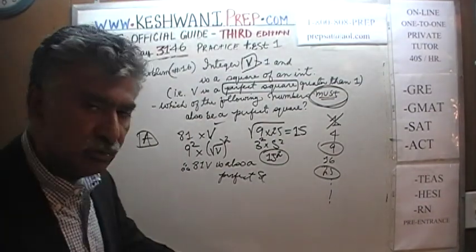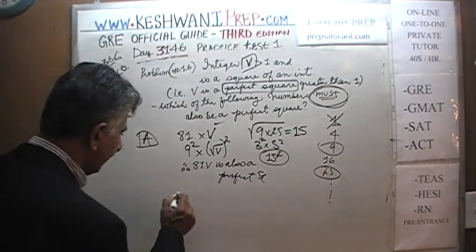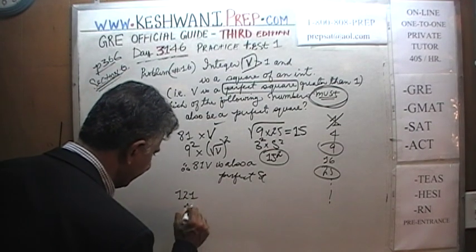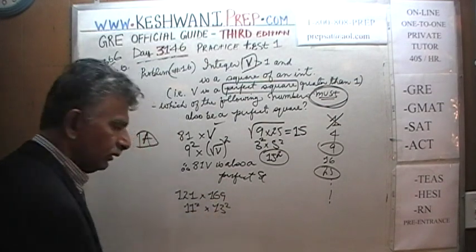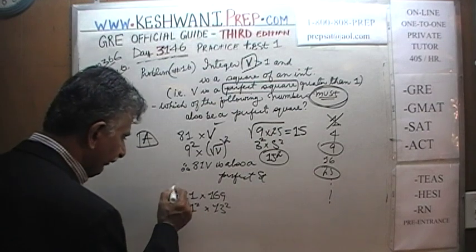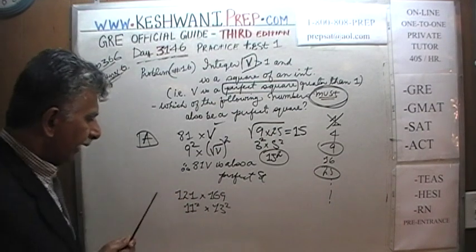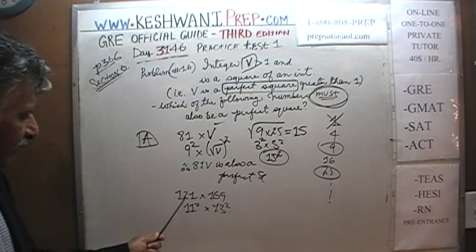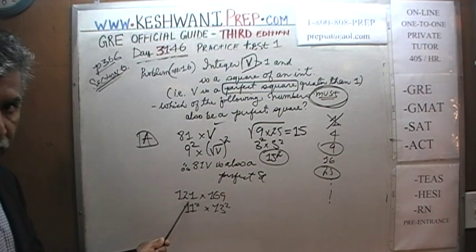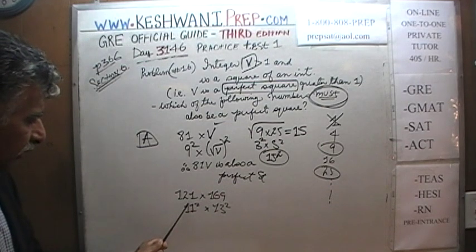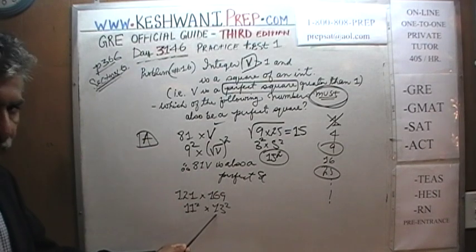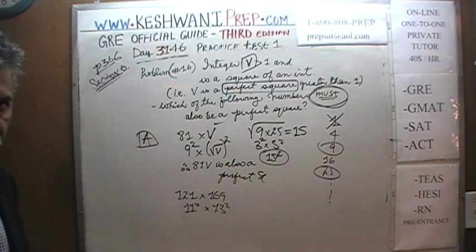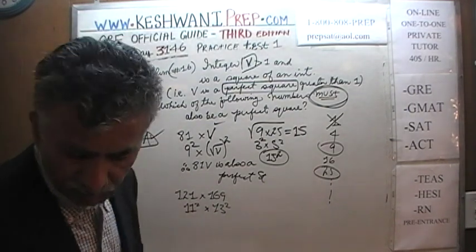You take any two perfect squares and multiply them, and the product is also a perfect square. For example, 121 — the square of 11 — times 169 — the square of 13. That's all we need to know. The product of two perfect squares is a perfect square. Therefore, statement 1 was very easy to figure out. It is statements B and C where people will have some trouble.